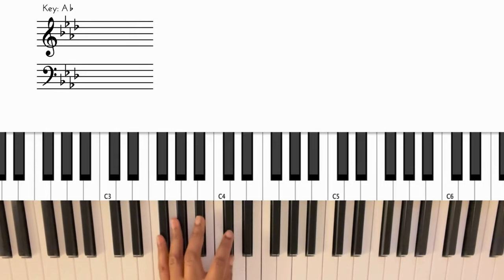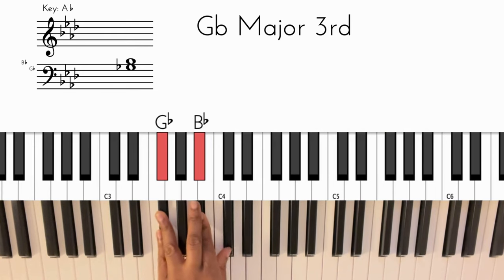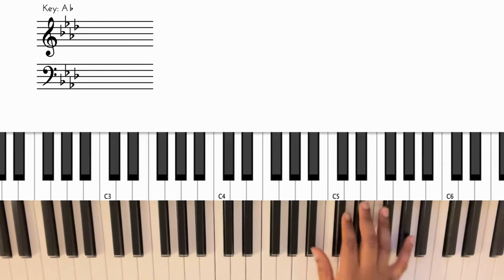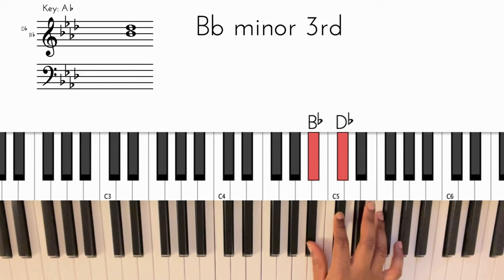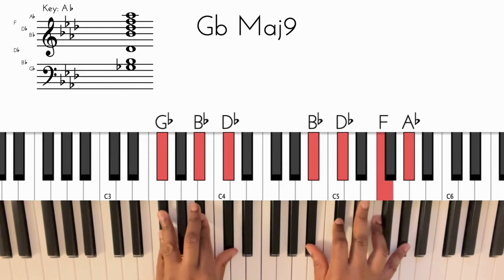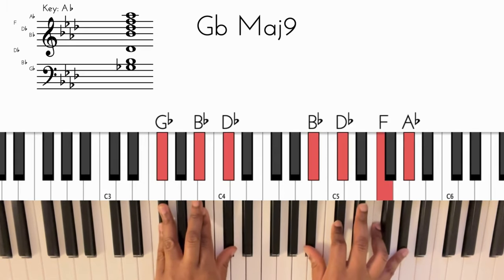All right, so my left hand for the first chord I'm doing F sharp, B flat, and C sharp. And in my right hand I'm doing B flat, C sharp, F, and A flat. So that's my first chord, and I hit that twice.